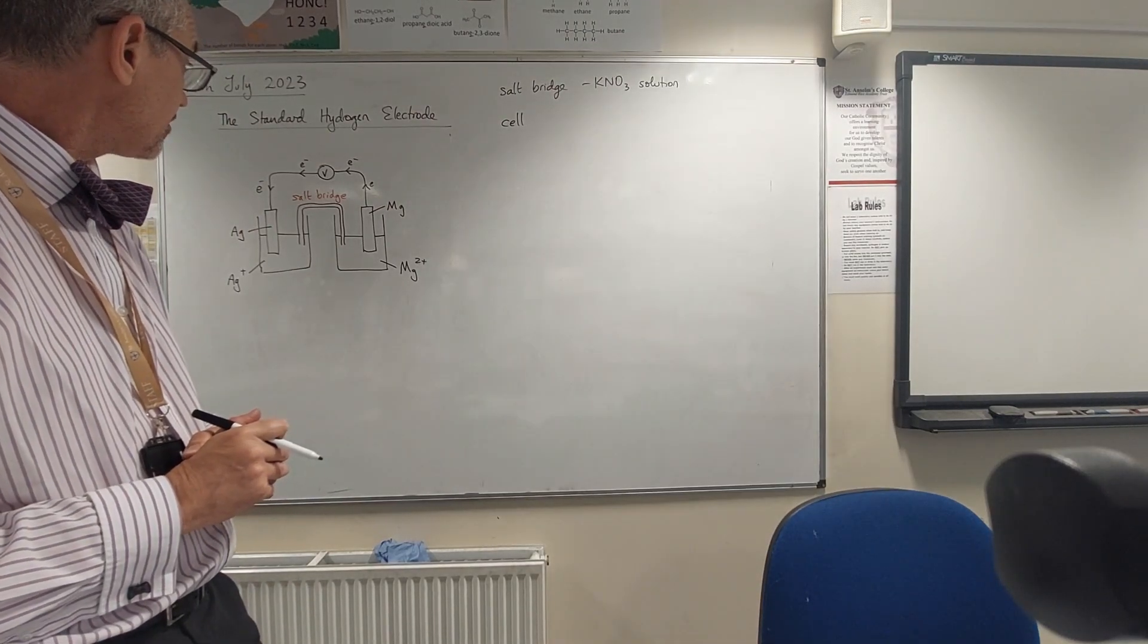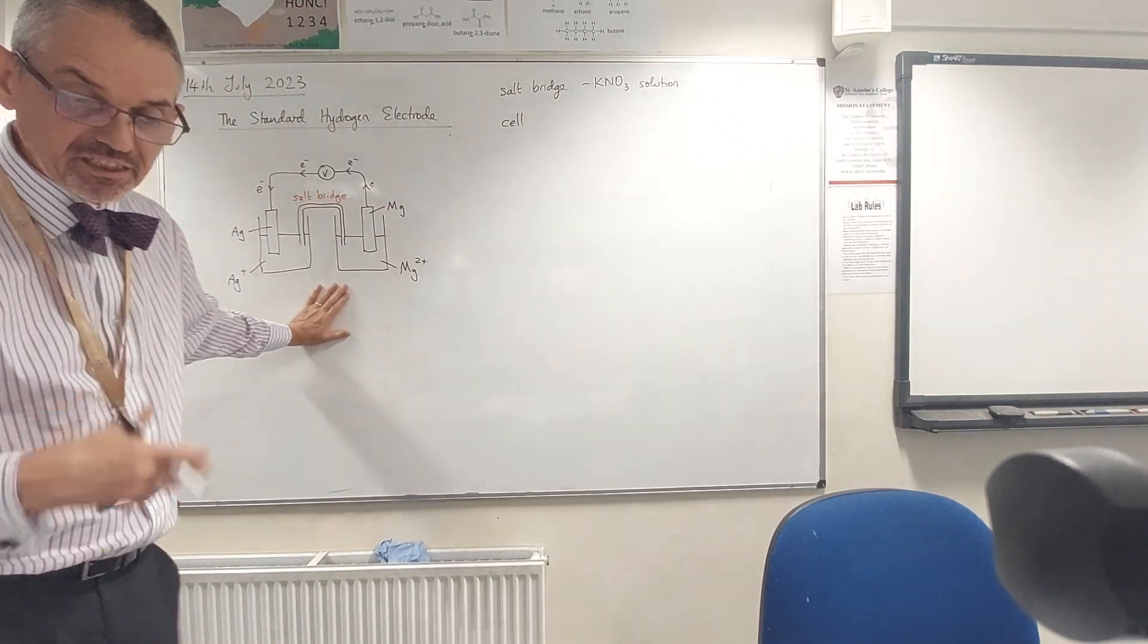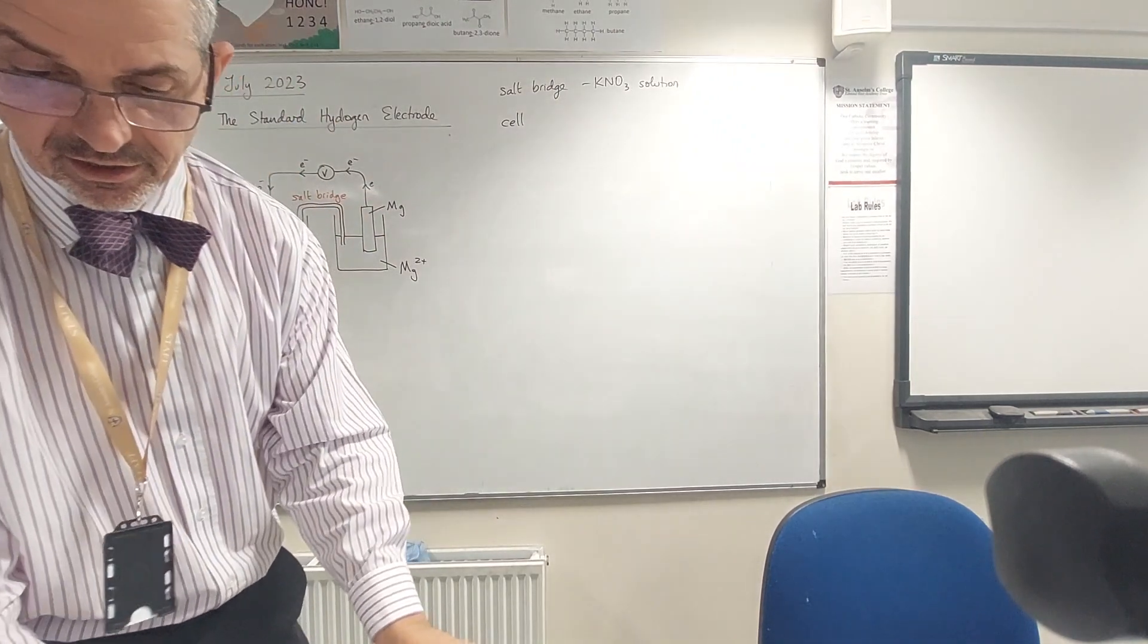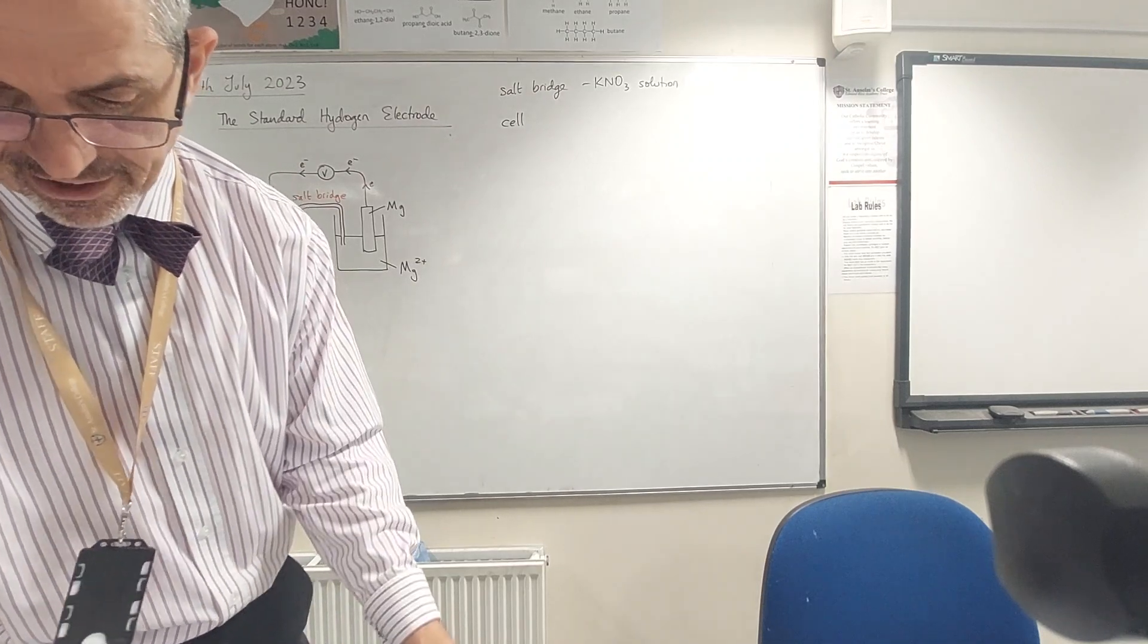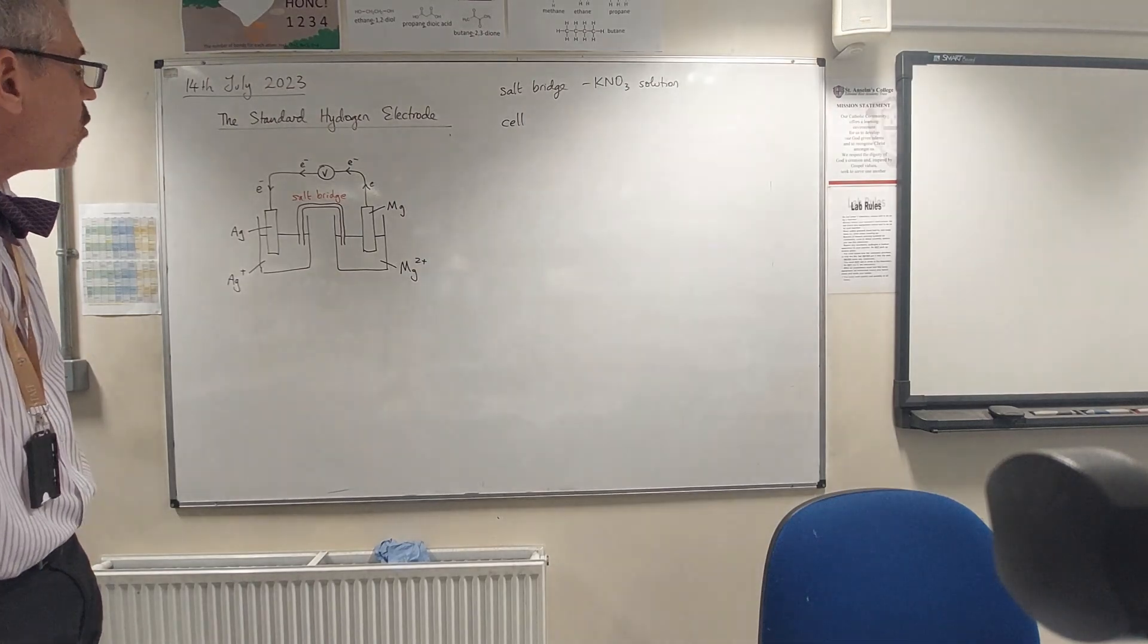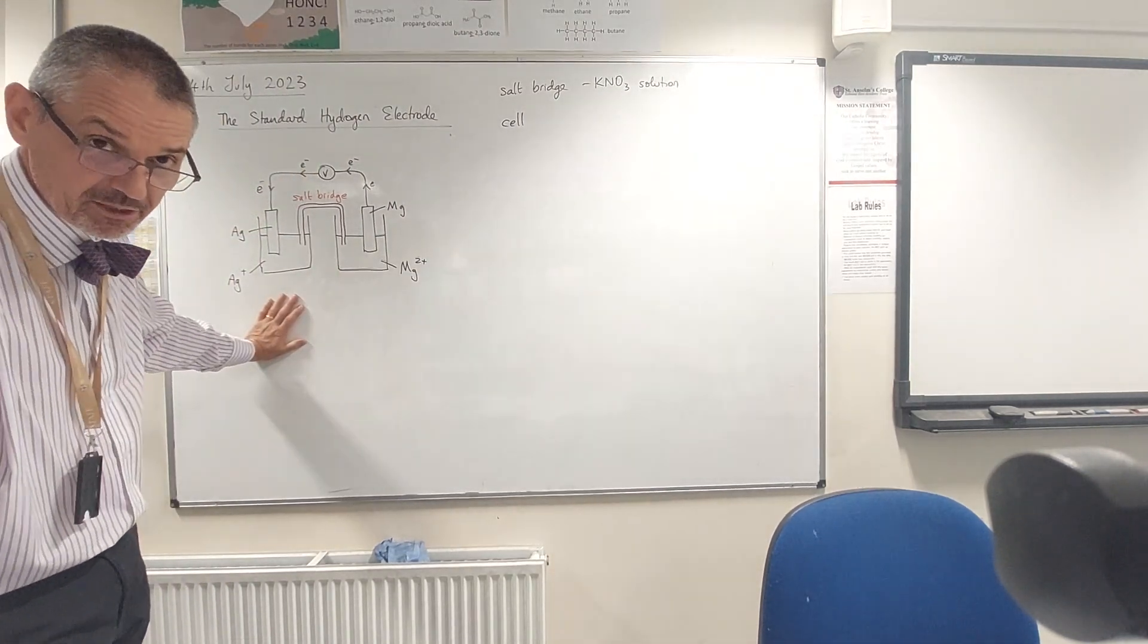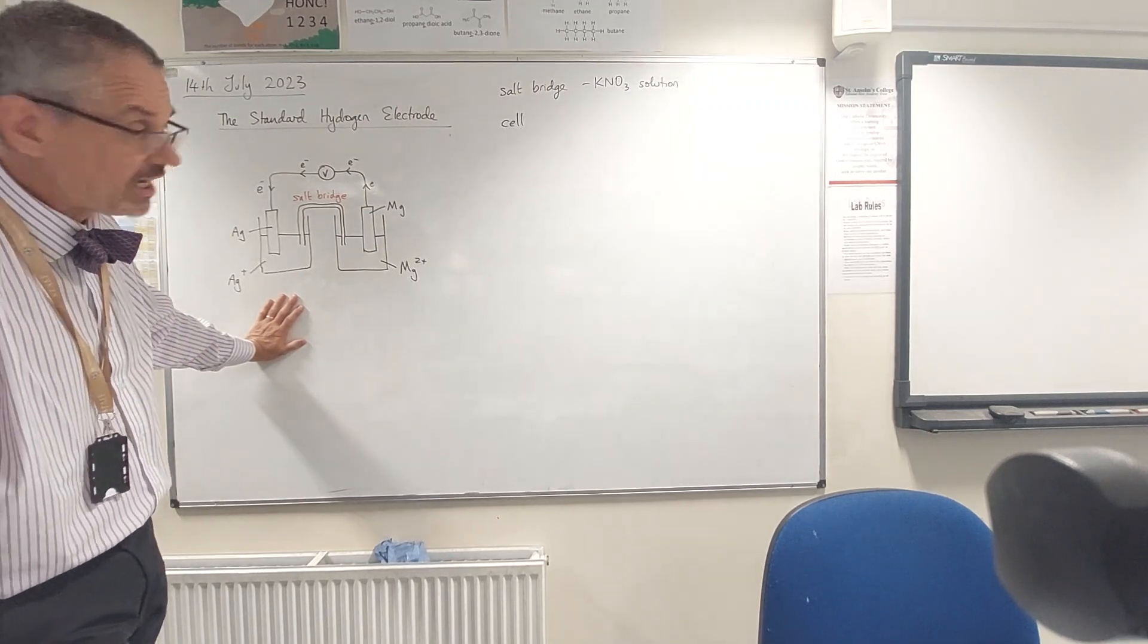So what is that we get? We get a nice juicy voltage from magnesium silver - 3.18 volts. But what we can't say is how much of that comes from the magnesium and how much comes from the silver. We still haven't solved that problem.